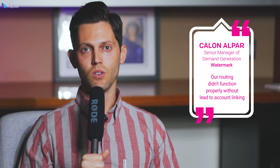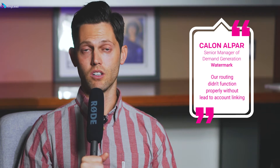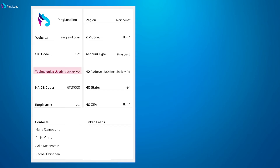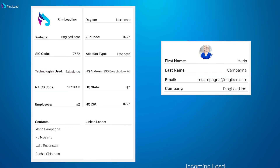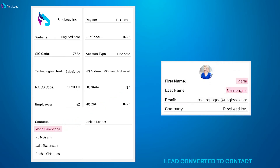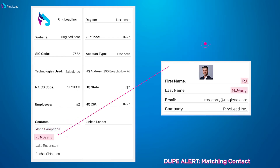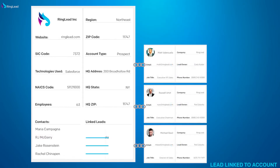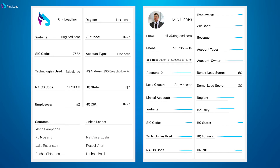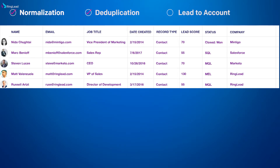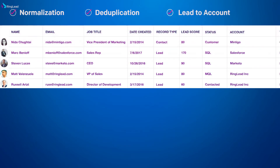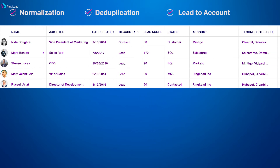RingLead's lead-to-account linking helps our sales routing because our routing is based on our account and what solutions an account uses. With the lead-to-account matching and the webhook, we're able to do the prevention piece — preventing duplicates — and we're also able to match leads to accounts and have that account data on leads. This traditionally wouldn't be possible without a tool that could do this on the onset of records being created, or with the ability to bulk update records to map to accounts. There's no other way to do this natively within Marketo or Salesforce.